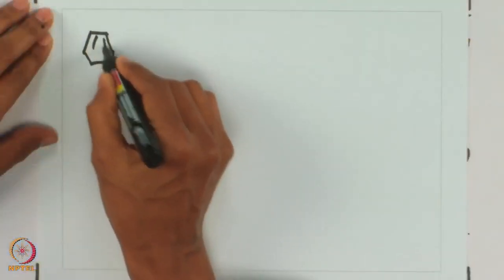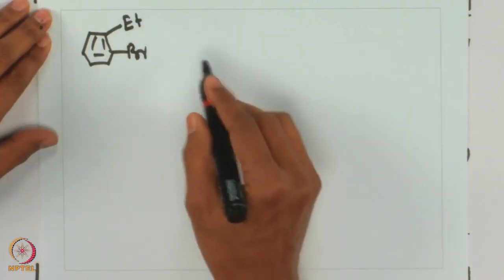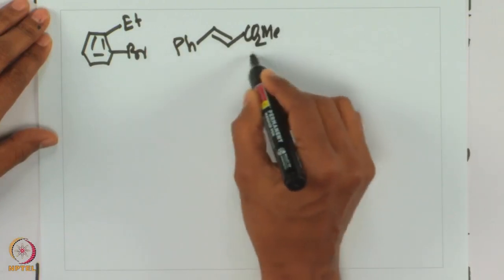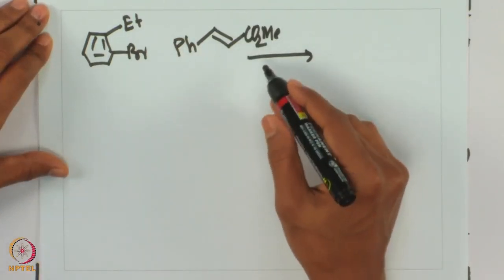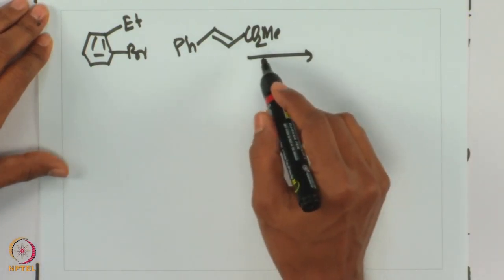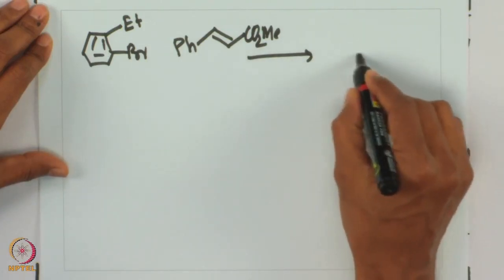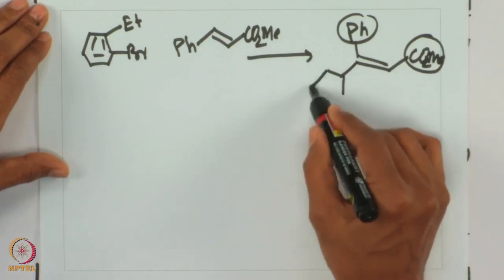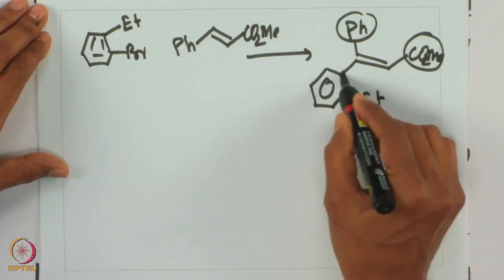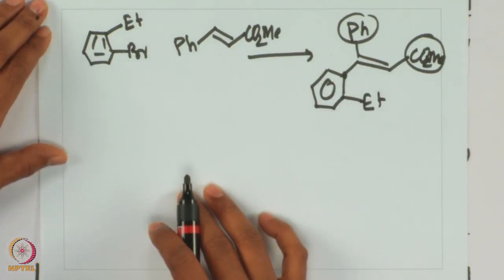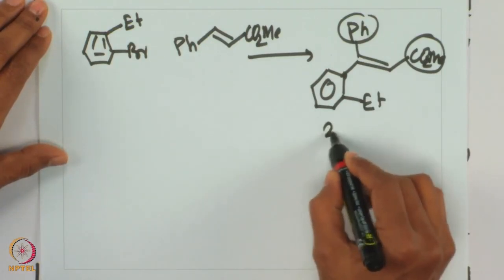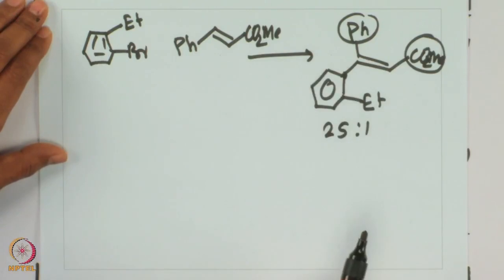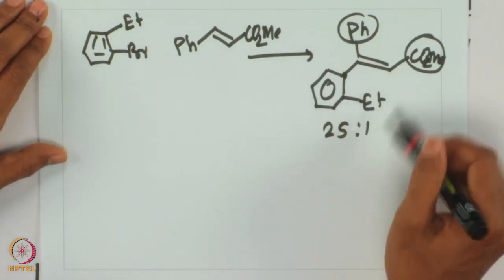Let us look at the bromide substituted at the ortho position. The pattern is not going to be different because the syn elimination or beta-hydride elimination requires syn geometry between the leaving group and the palladium center. Once again, phenyl and CO2Me should be on the same side and the incoming aryl group on the other side — the ortho substituent not hampering the selectivity too much. This gives selectivity 25 to 1 using palladium acetate, tetrabutylammonium chloride, and dicyclohexylmethylamine as base, reported by Buchwald in 1999.